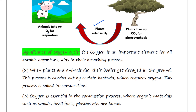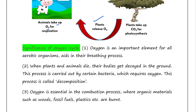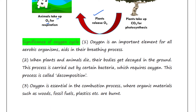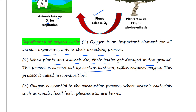Now let's see the significance of the oxygen cycle. Oxygen is an important element for all aerobic organisms and it aids in the breathing process. When plants and animals die, their bodies get decayed in the ground, and this process is carried out by certain bacteria which require oxygen — this process is called decomposition.